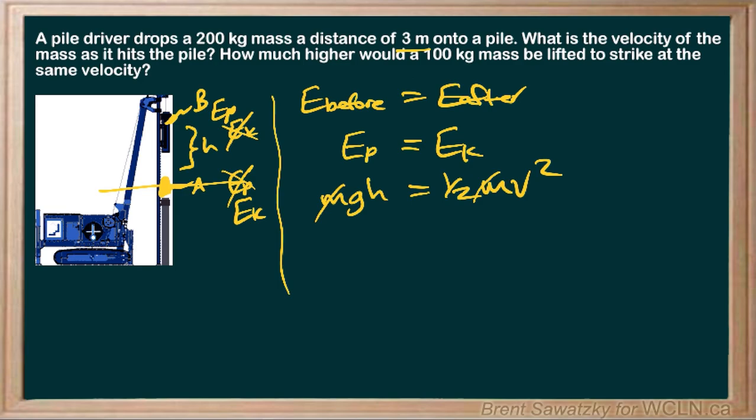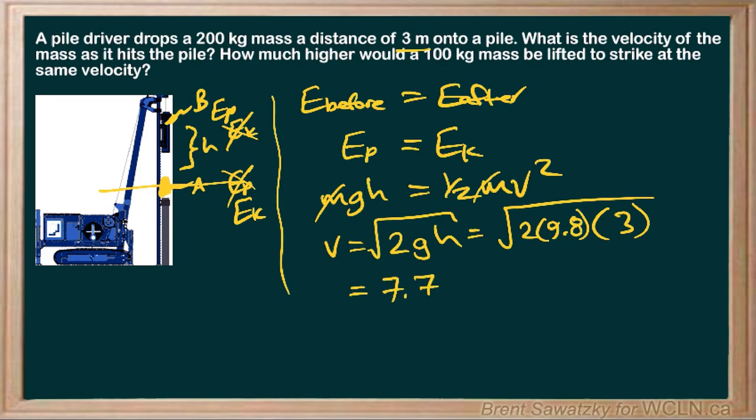We rearrange for v, so multiply both sides by 2: v equals square root of 2gh. We can plug those in: 2, 9.8, and 3. Pull out the calculator: 7.7 meters per second.